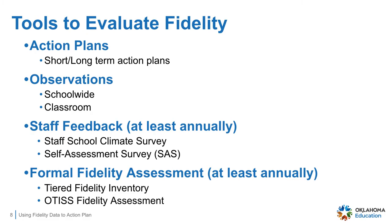Often the students and faculty have the most valuable information. There are copies of the student school climate survey and the personnel school climate survey located in the Using School Data and Planning Guide to Implement Prevention and SEL Programming Lessons. Finally, the School-wide Positive Behavioral Interventions and Supports Tiered Fidelity Inventory, called SWPBIS-TFI, and the Oklahoma Tiered Interventions System of Support Fidelity Assessment.